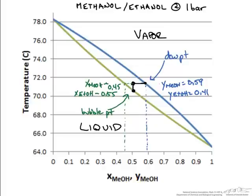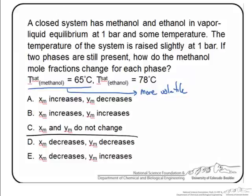Now we know the compositions of both the vapor and liquid phases. Going back to the problem, we increase the temperature slightly while still maintaining two phases. Doing this again, we see that the mole fraction of methanol in the vapor phase has decreased, and the mole fraction in the liquid phase has also decreased. So when we increase temperature while maintaining two phases, the mole fraction of the more volatile species decreases in both phases. The answer to this question is D.